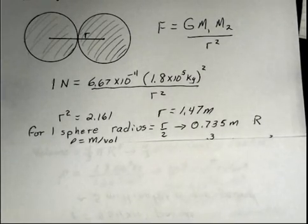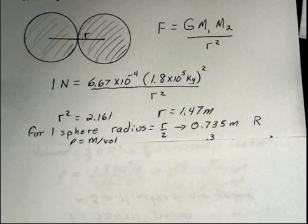Now for the volume of one of the spheres, I need the radius of one of the spheres. Now these two spheres are 1.47 meters from center to center. That's the meaning of the R symbol in Newton's law of gravitation.